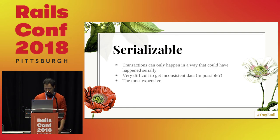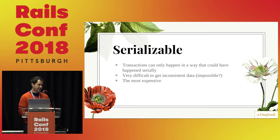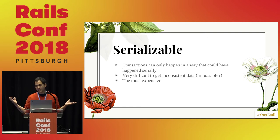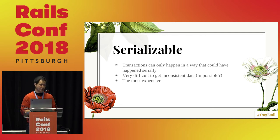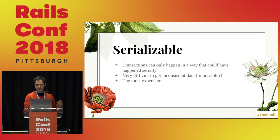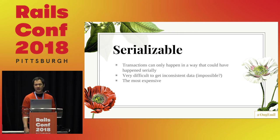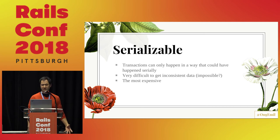Serializable is basically full isolation. Transactions can only happen in a way that they could have been written serially — this is hopefully a full implementation of the 'I' in the ACID spec. I could not think of a way to get inconsistent data at this level without incorrect code. If you think of a way, let me know — I think it'd be really interesting. This is the most expensive level.